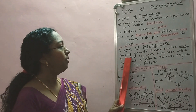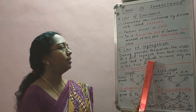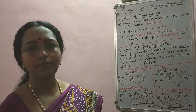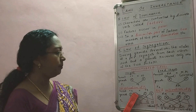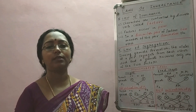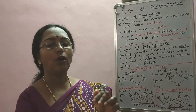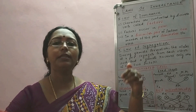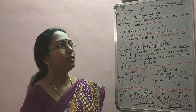The law of segregation states: during gamete formation, the alleles of a pair segregate from each other such that a gamete receives only one of the two factors, or one of the two alleles. You can see this clearly in the monohybrid cross. During gamete formation, each gamete will get only one allele of a character — that is the essence. So the alleles separate out into the gametes, and each gamete receives only one allele of a character.